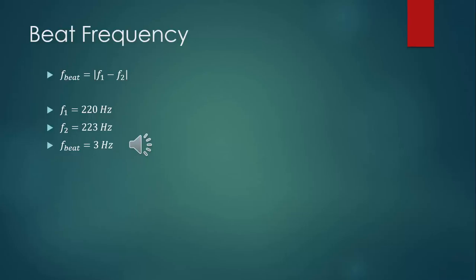That audio clip was five seconds long. If the beat frequency is 3 Hz, how many times should you hear the sound fluctuate from loud to quiet? Go back and listen again. Let's look at another example: the same 220 Hz combined with 240 Hz gives a beat frequency of 20 Hz — 20 times every second it should fluctuate between loud and quiet. This is going to be hard to hear and probably impossible to count, but you can still tell that it's fluctuating between loud and quiet.